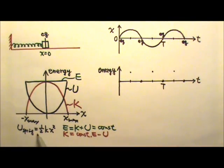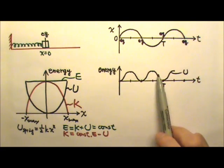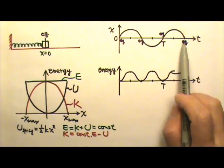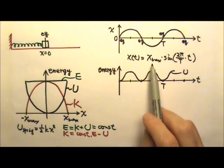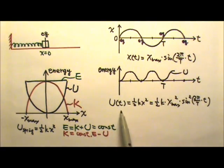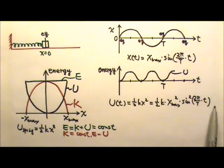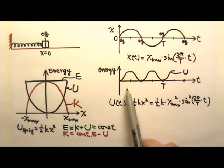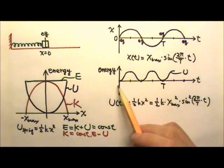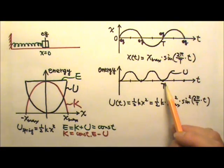Since potential energy is one-half kx squared, all these points have positive potential energy, and the potential energy versus time graph looks like this. We can also use equations to plot this graph. Since our position is a sine function, x as a function of time is x-max times sine of 2π divided by period times t. The potential energy would be a sine squared function, which gives exactly the same graph. Because the potential energy is a sine squared graph, it goes up and down twice in one period.